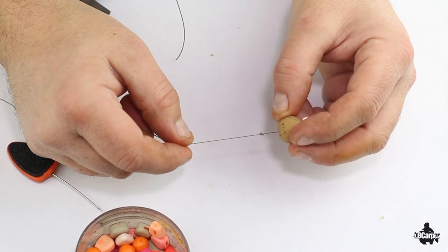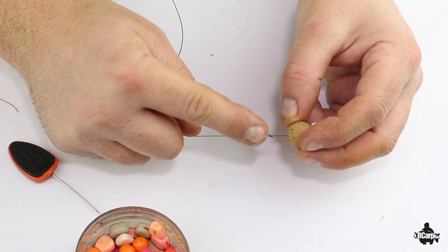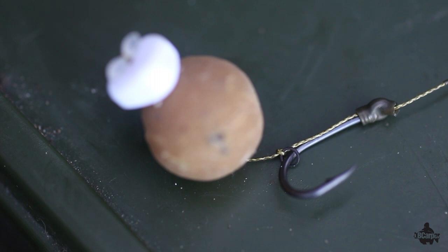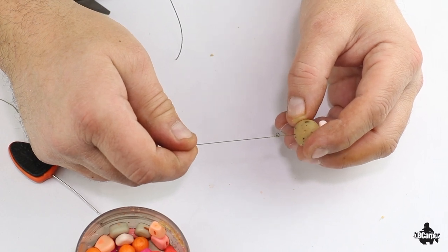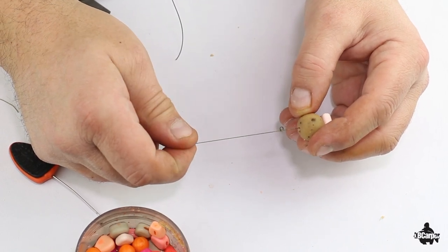That's to hold the hair coming off the bend of the hook. It's not a blowback rig—it's there for one purpose only and that's to hold the hair in a certain position which gives it much better rig mechanics.